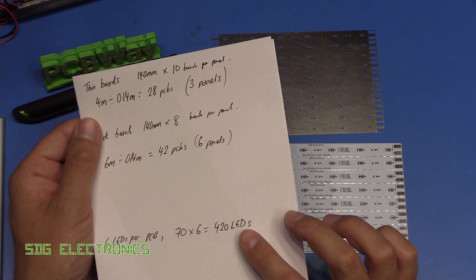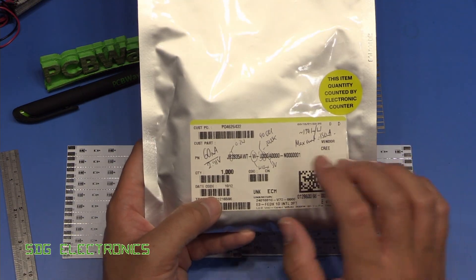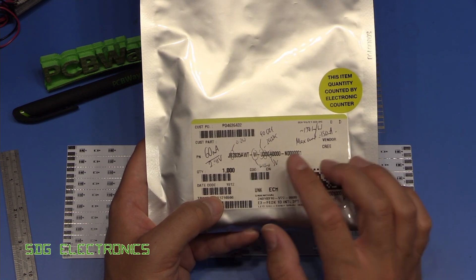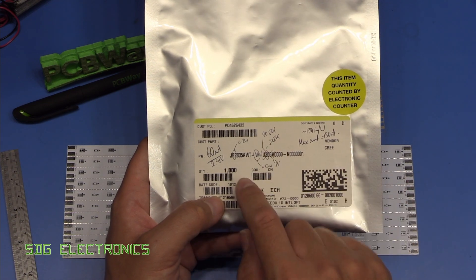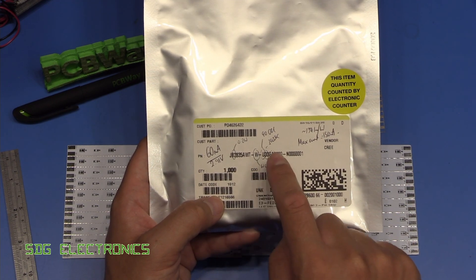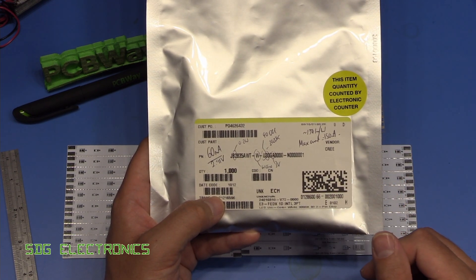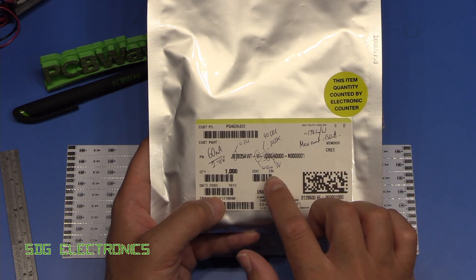Total of 420 LEDs and the LEDs that we're going to be using on these boards are these Cree JB2835AWT LEDs. These are some really nice LEDs that have a high color rendering index, so these are 90 CRI, a color temperature of 3000 Kelvin which matches the rest of the lighting in the room.